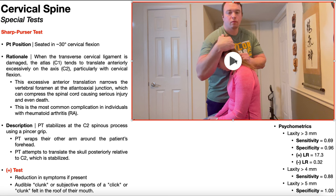So how does this work? For somebody that has damage to the transverse cervical ligament, the position of cervical flexion causes excessive anterior translation of C1 relative to C2. By moving the skull posteriorly — by virtue of its attachment on C1 through the occipital condyles — you're also moving C1 posteriorly, essentially moving it back into the proper position and relieving potential compression on the spinal cord. The Sharp-Purser test is therefore an easing test, because a positive test is a reduction in symptoms if present.